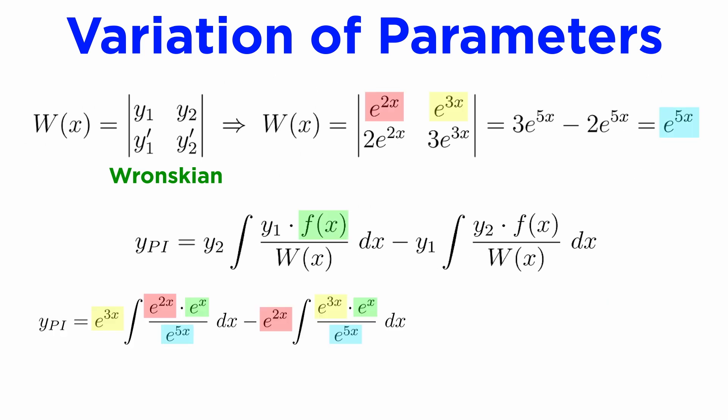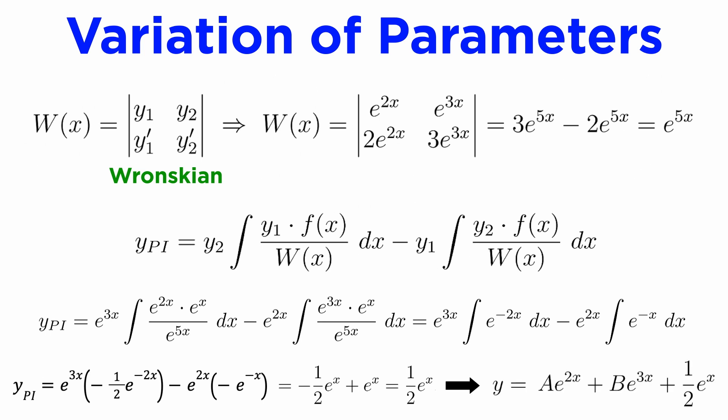In our example, we can put our expressions for y1, y2, f(x), and W into the variation of parameters formula. Simplify all the exponentials inside the integrals, evaluate the integrals, and combine the exponentials to get our particular integral as (1/2)e^x, just like last time. And adding this on to our complementary solution gives the full general solution.